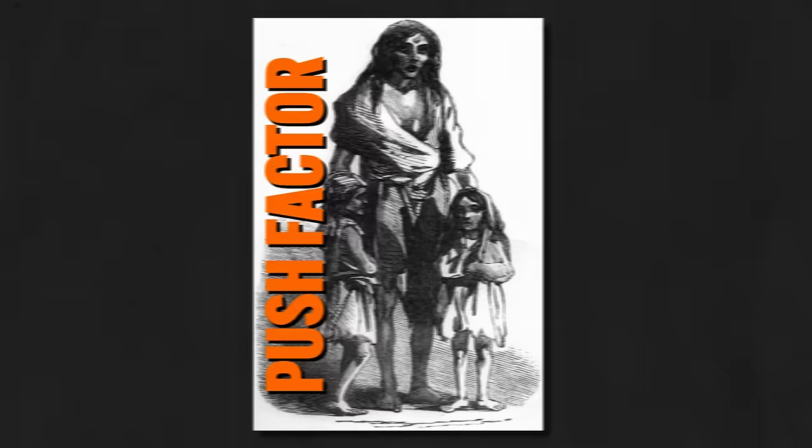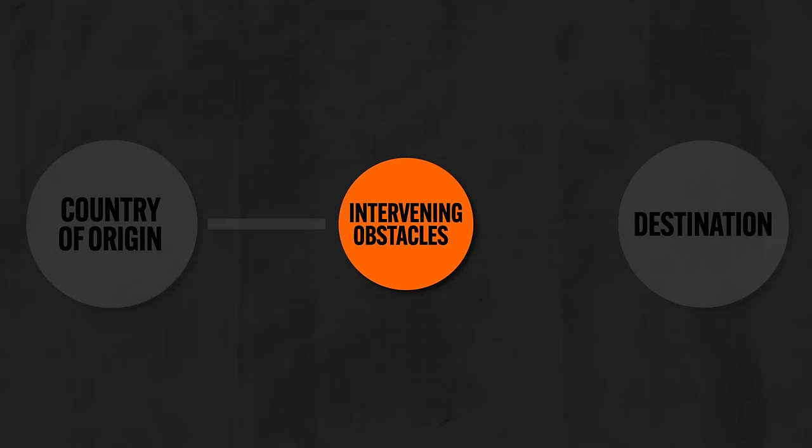For example, during the Irish potato famine in the 19th century, millions of Irish poor were starving — a push factor — so many migrated to the United States where there was food and work — a pull factor. When migrants make the decision to leave for their new destination, they will almost always experience intervening obstacles — challenges they must overcome — or intervening opportunities, which are things they encounter that change the original destination of their migration.